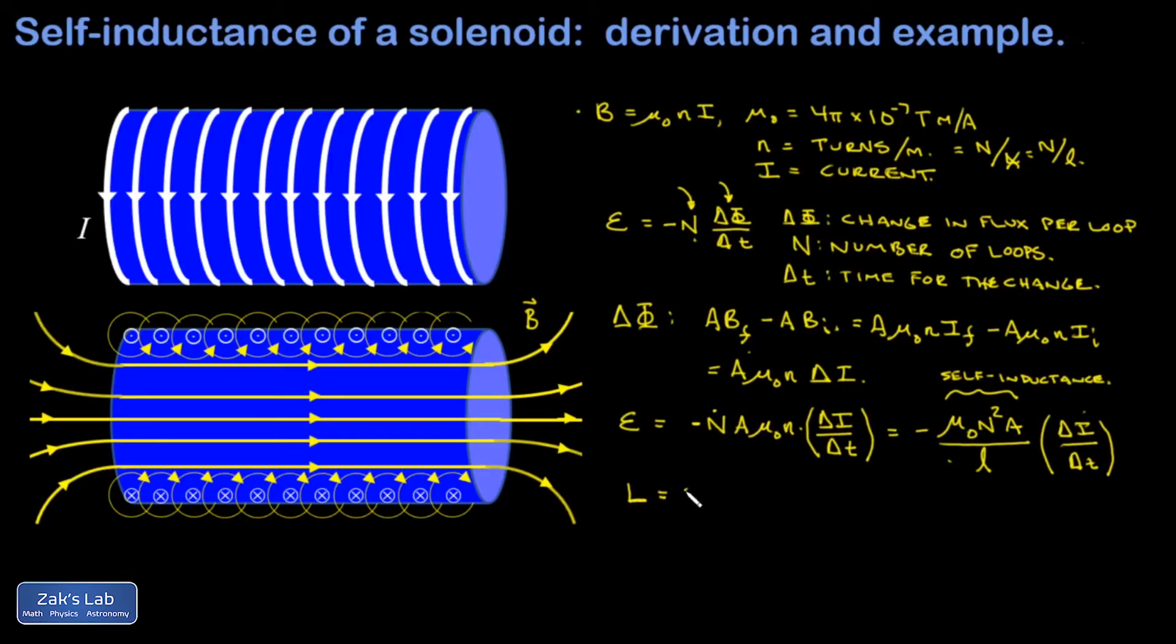We commonly use the symbol capital L for self-inductance. So for a solenoid, capital L is given by mu naught n squared A over L, little L for the length of the solenoid.